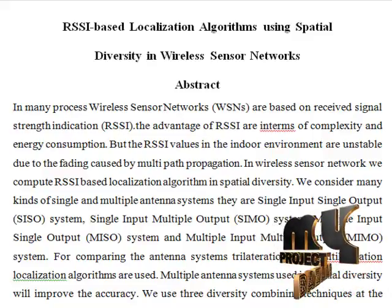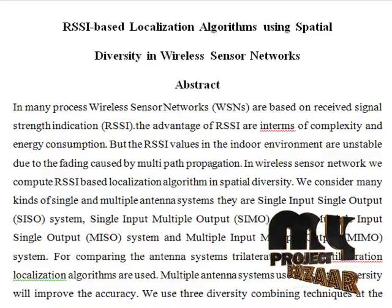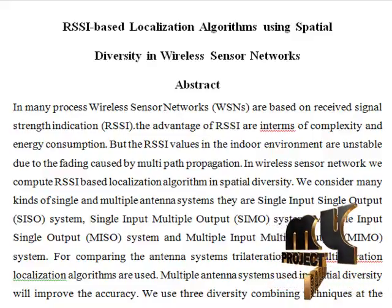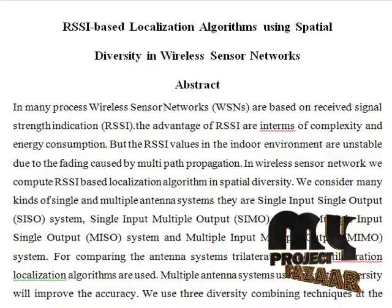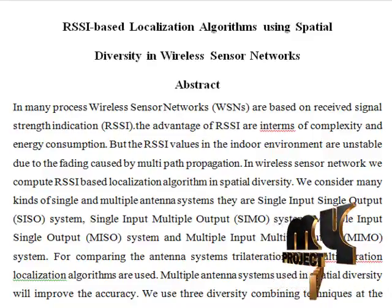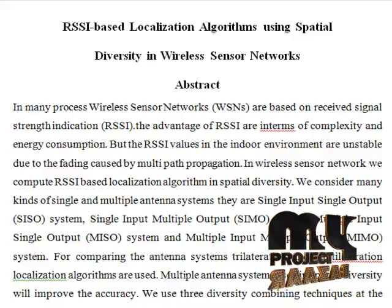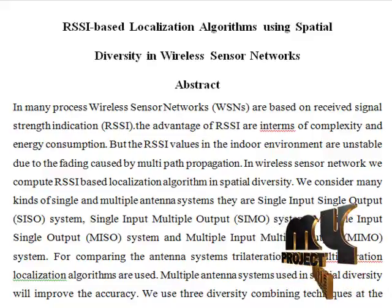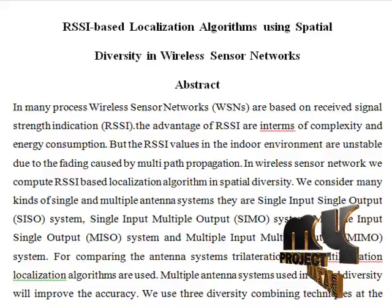Ideally, the ranks of the reference nodes based on RSS readings should be monotonic with their ranks based on true Euclidean distances. However, this is not true in the real world because of the presence of multipath fading and shadowing in the RF channel.